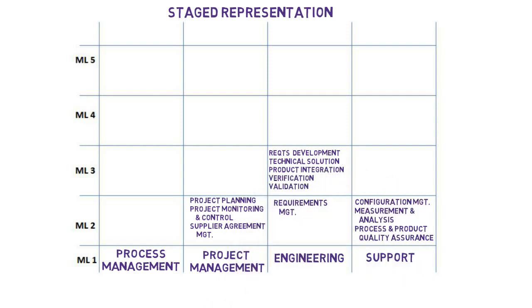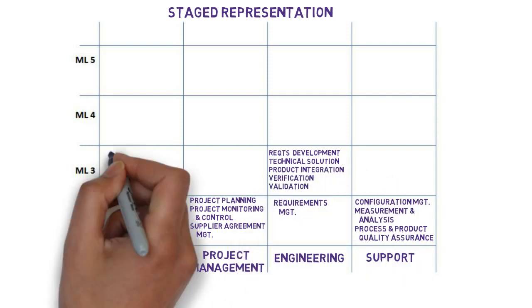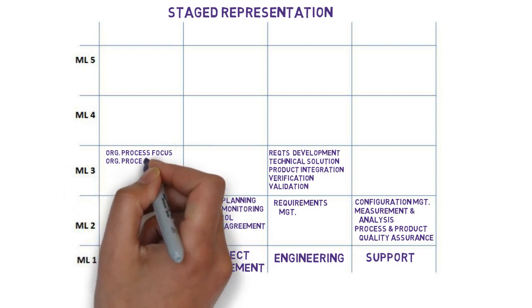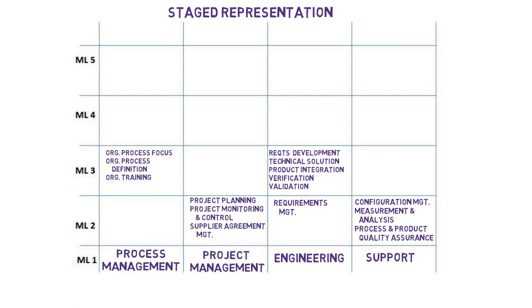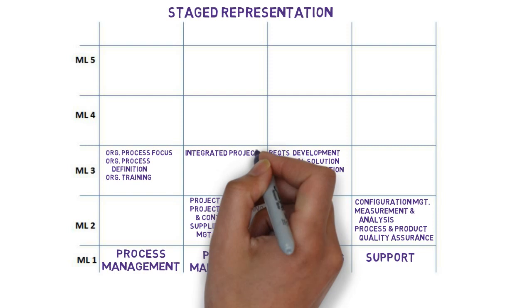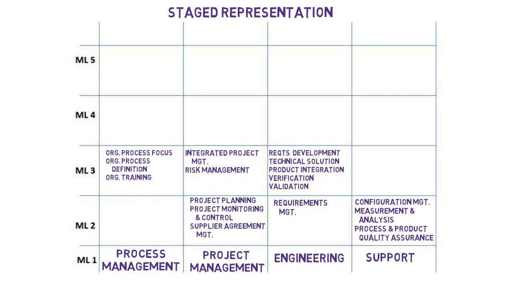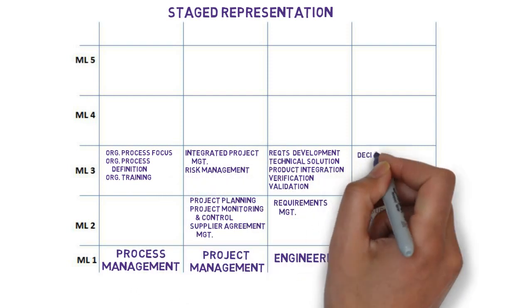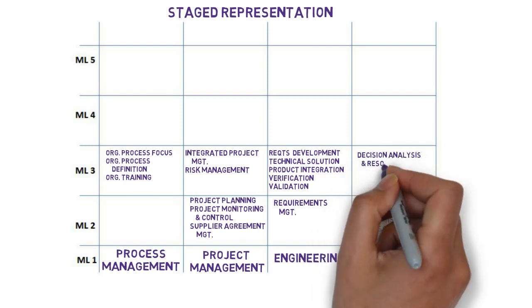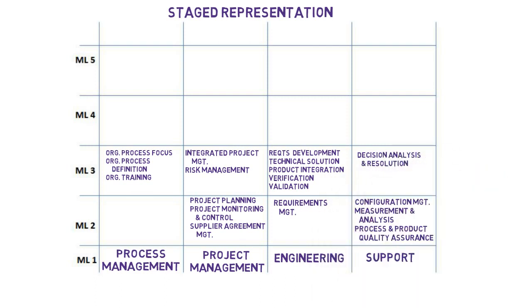At maturity level three, we can bring in the engineering process areas since projects now support the engineering activities, and we can start to characterize our work and standardize some of it. Putting in place a disciplined way of managing risks and making decisions helps strengthen project performance and sets the stage for better and more consistent metrics.